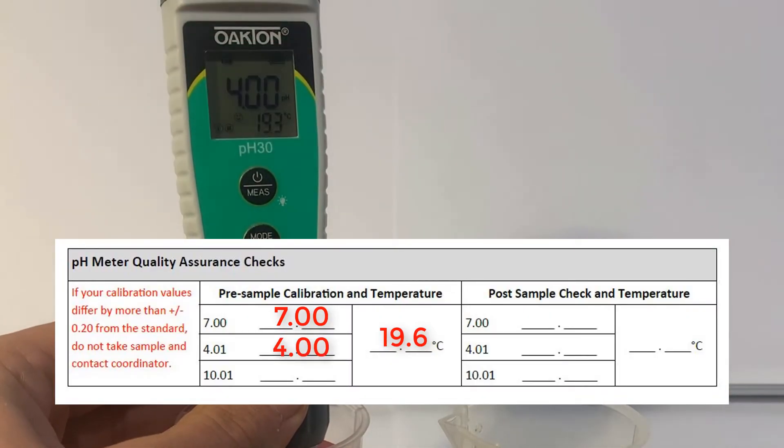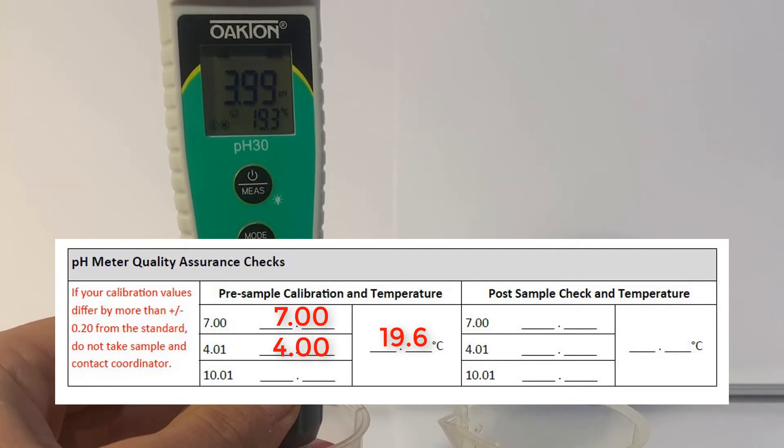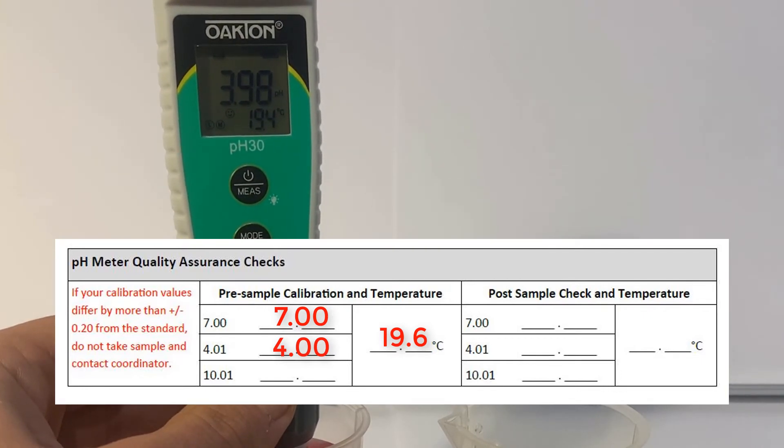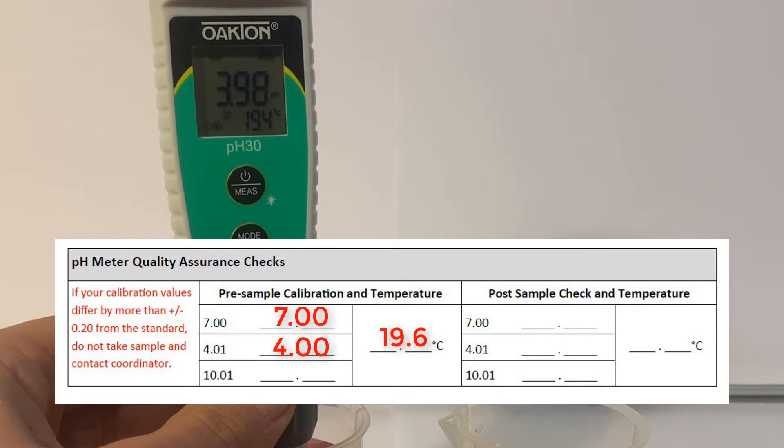If you used Buffer 4 and 7 solution, you will see an L and M icon for low and middle in the lower left corner of your screen. If you use 7 and 10, you will see an M and H for middle and high.